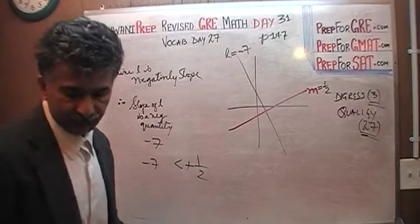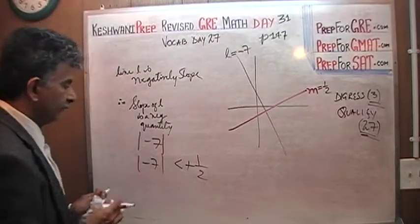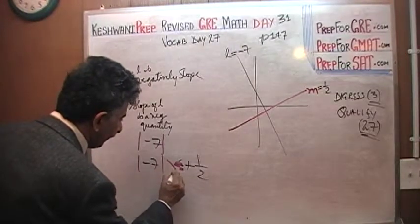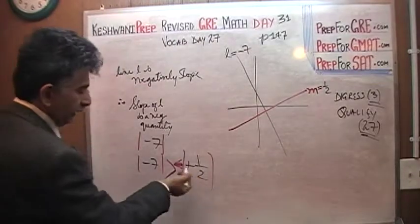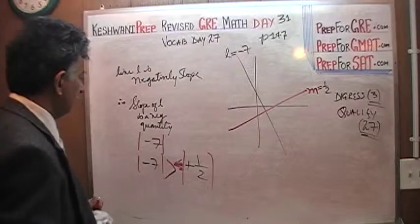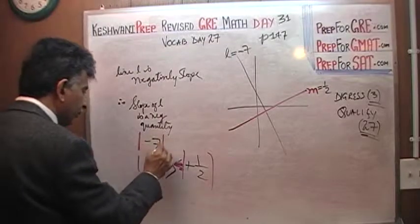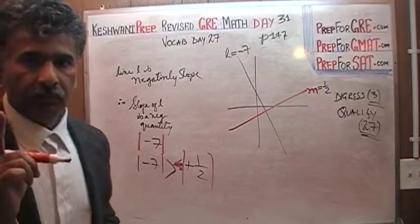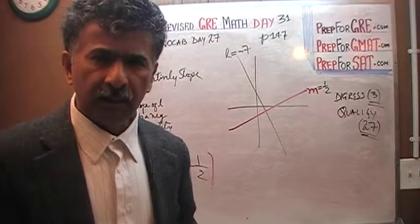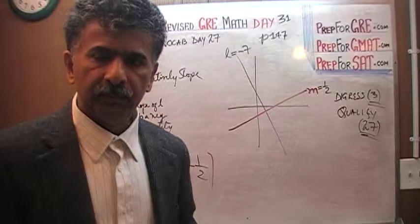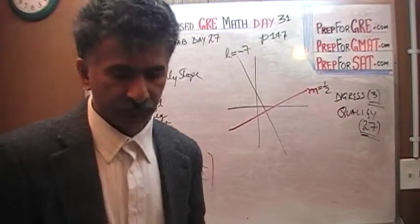Unless we take the absolute value of it. If you take the absolute value of negative 7, which is positive 7, it is greater than positive one-half. So what we should have said is: the steeper the line, the greater the slope — as long as we're talking about the absolute value of the slope. If you're simply looking at the mathematical value, the negative slope can make a visually steep line have a numerically smaller slope.